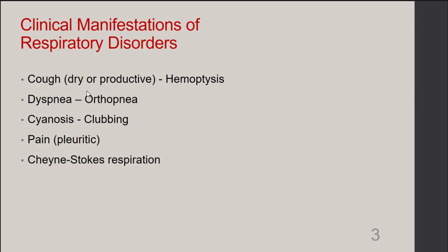Orthopnea is a type of dyspnea where individuals experience shortness of breath when lying flat on their back. These individuals will let their practitioner know that they can't sleep lying on their back, and the only way they can sleep without shortness of breath is sitting up or propped up to some extent. Cyanosis is that bluish haze in the skin and mucous membranes due to reduced oxygen. Clubbing can also be seen at the fingernails, where the nail and tip of the finger is rounded out like a drumstick.